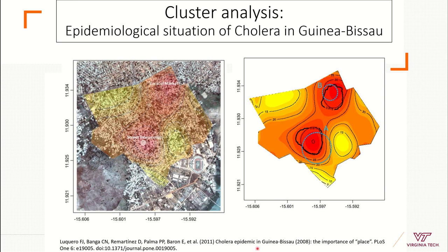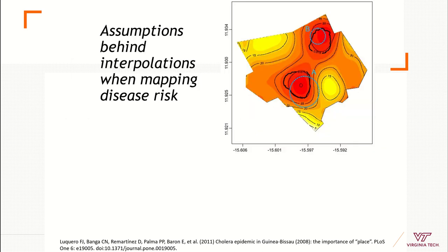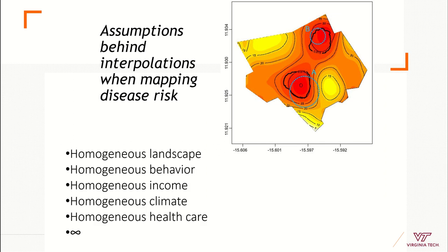Here you can see that again we are identifying densities of cases to identify where we have more risk compared to where we have less risk. One of the problems of using these methods is that when mapping diseases based on densities or clusters, we have the assumption that the landscape, behavior, income, and climate are homogeneous in the study area, and that health care access is homogeneous.